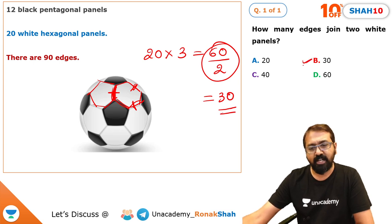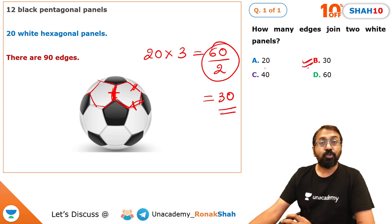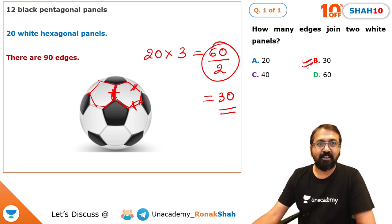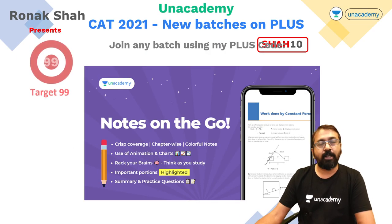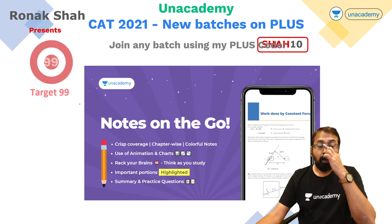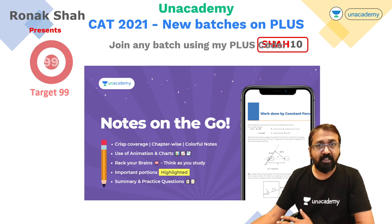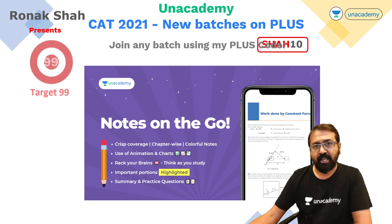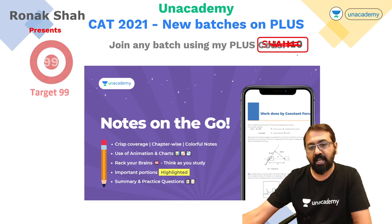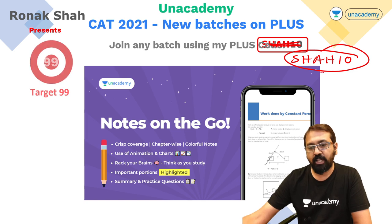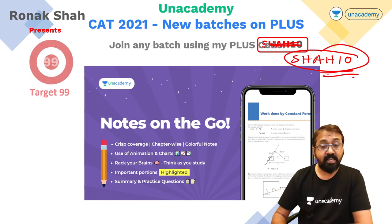Both approaches give the same answer: 30. I hope you liked this puzzle — I will keep coming up with more. You can also go for Unacademy Plus courses for structured preparation. When you subscribe to Plus or Iconic, apply my code SHA-10 to get a 10% discount.